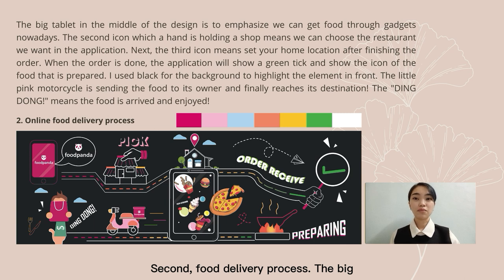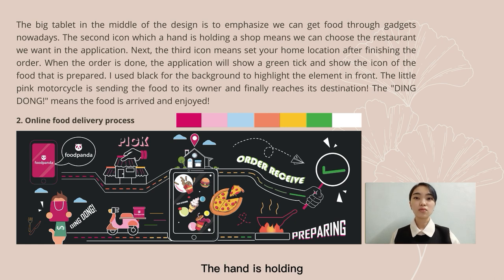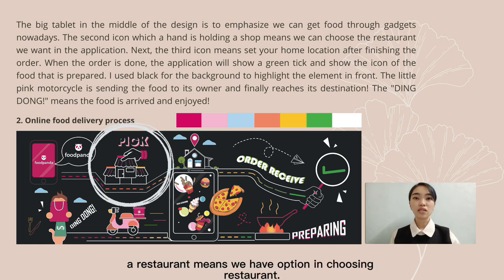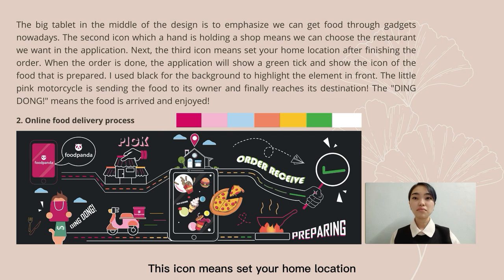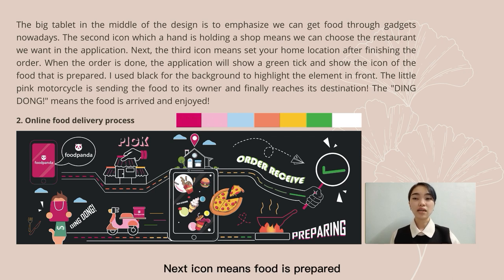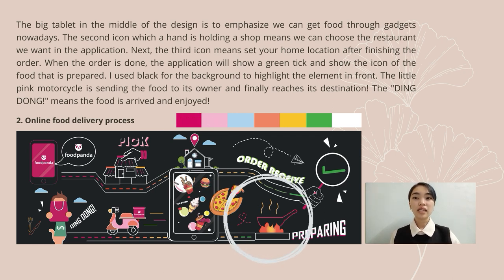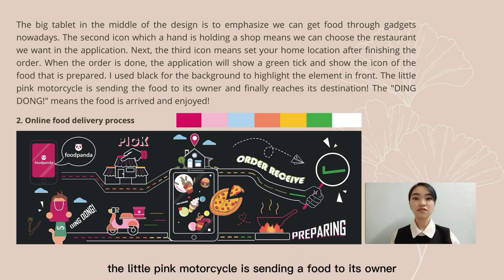Second, food delivery process. The big tablet in the middle emphasises that we can get food through gadgets nowadays. The hand holding a shop means we have options for choosing a restaurant. This icon means setting your home location after finishing the order. The next icon means food is prepared, and the little pink motor is sending food to its owner and finally reaches its destination.